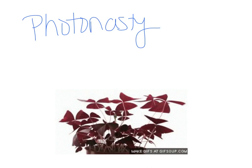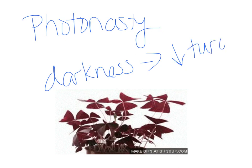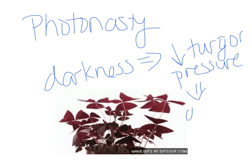The first example of a nastic movement is photonasty — a response to light. In this example, when there is darkness, that causes the leaves to droop. Darkness decreases turgor pressure in those leaves, causing ions to leave the cell and water to follow, which causes the leaves to droop. In response to light, there is an increase in turgor pressure and the leaves stiffen back up.